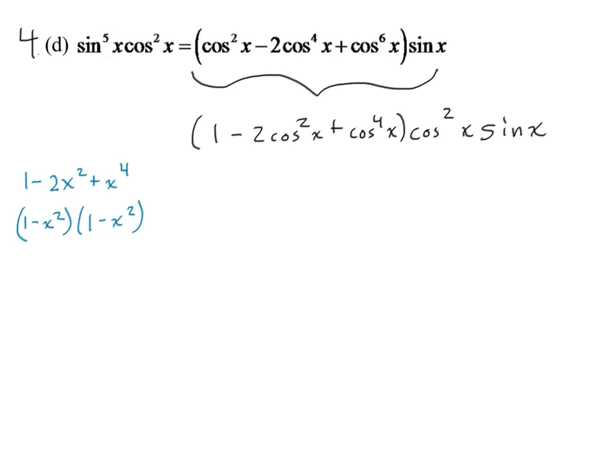All right, so now, if I rewrite this over here, we would have 1 minus cosine squared X and 1 minus cosine squared X, just like these guys over here. And then we have cosine squared X times sine X.